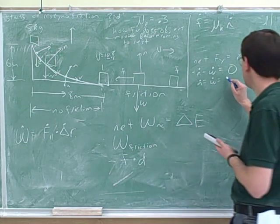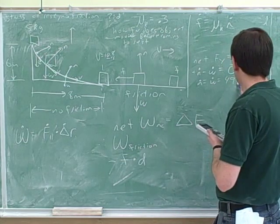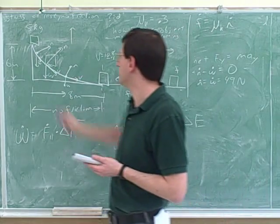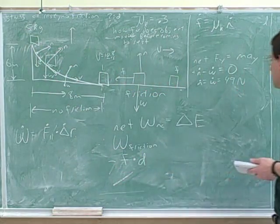49. Good. m times g, so that would be 5 times 9.8. 5 times 9.8 is 49.